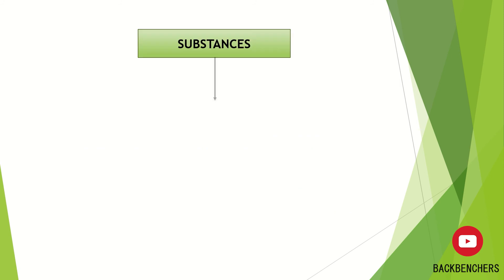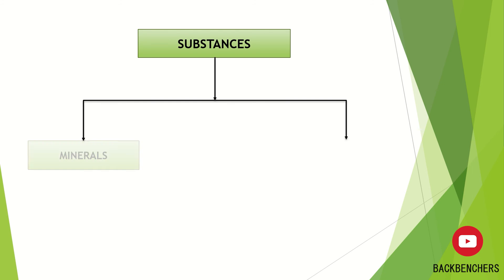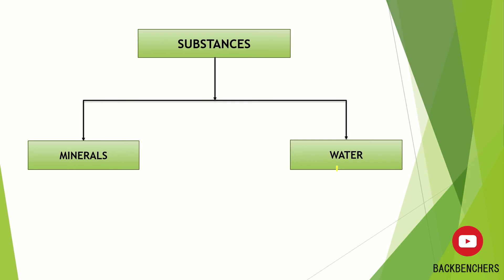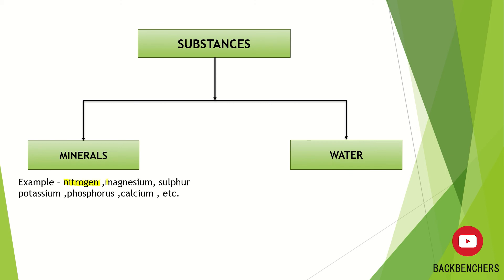Plants basically absorb two types of substances: one is minerals and the other is water. Minerals are present in the form of ions or salts, and water is present in its liquid form as H₂O. Certain examples of minerals are nitrogen, magnesium, sulfur, potassium, phosphorus, and calcium. All of these minerals have separate functions in plants, making them very important for the survival of the plant.